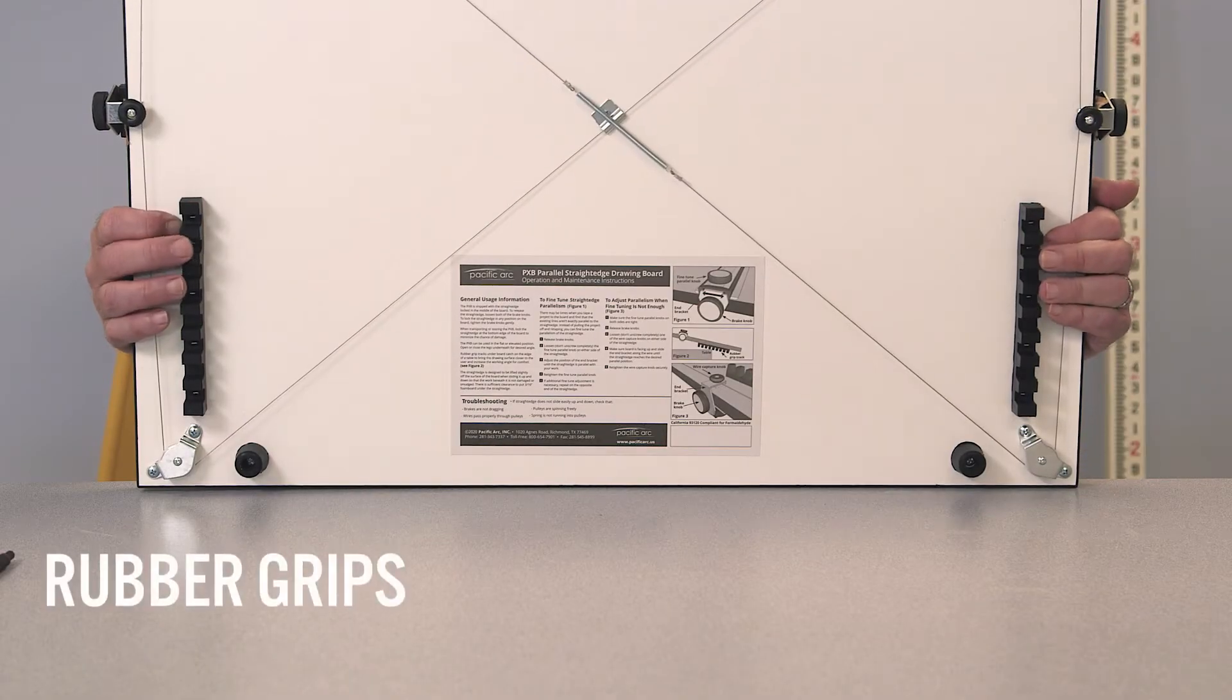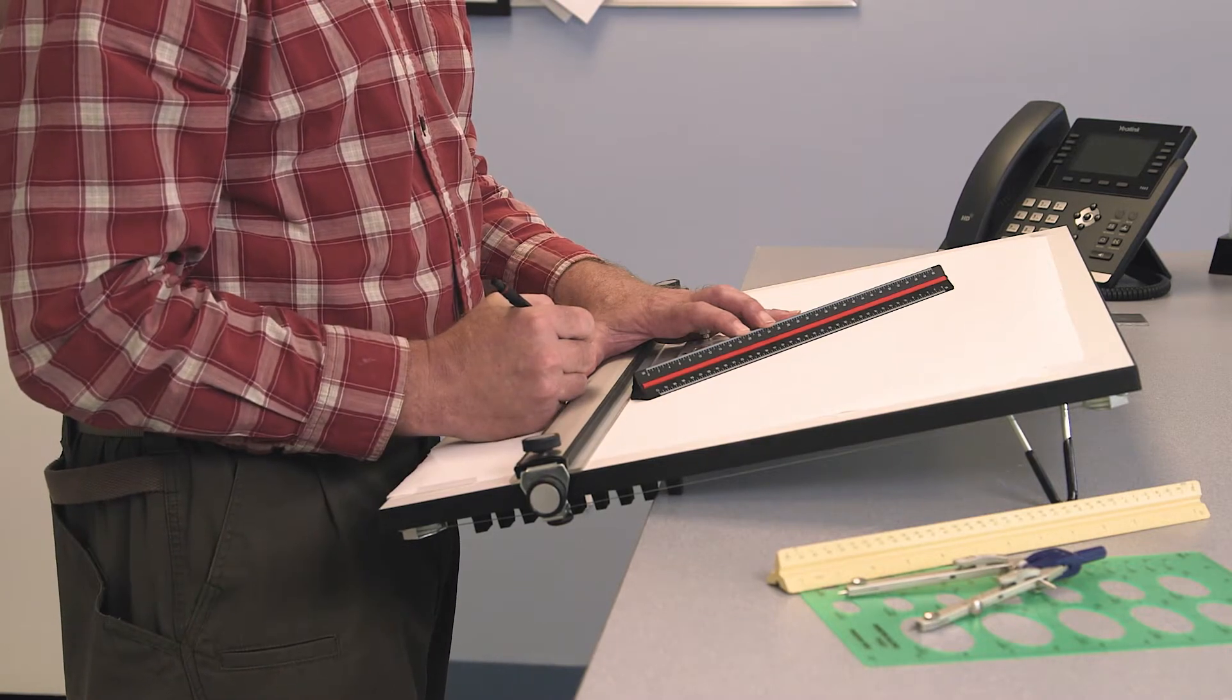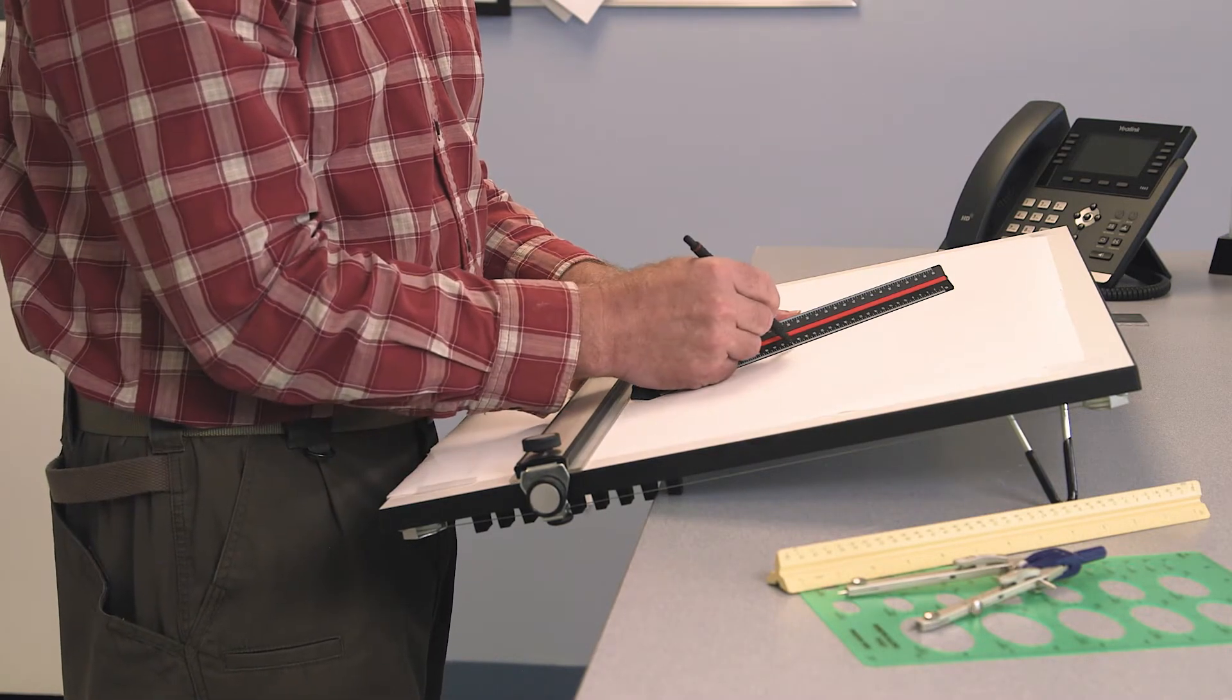The rubber grips can hold the edge of your work surface if you need to move the board closer to you or to increase the working angle.